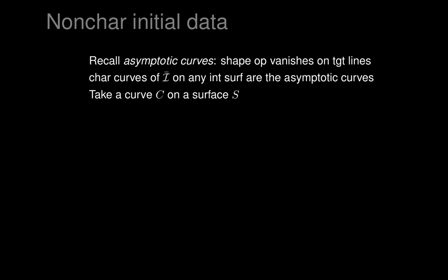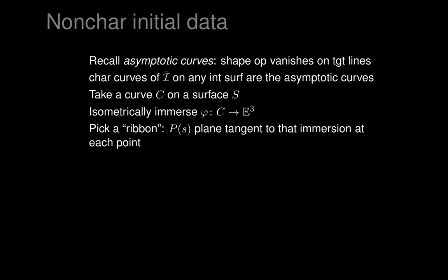Suppose we took a curve C drawn on the surface S, then isometrically immerse that curve in an arbitrary manner into three-dimensional Euclidean space. That's not enough initial data to determine our isometric immersion. We'll also pick a ribbon — a plane P tangent to that immersion at each point — which will be the collection of potential tangent planes for our immersed surface. We want to immerse our surface S and make it tangent to this ribbon along the image of the curve C. A ribbon consists of an immersed curve together with a plane tangent to that immersion at each point.